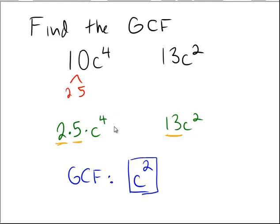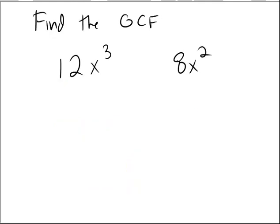So again, the process would be to prime factorize and then take the least of the possible exponents. Let's do another example just to get some extra practice here. 12 would be 6 times 2, which is 2 times 3. So the prime factorization would be 2 copies of 2, 1 copy of 3, and then the x cubed.